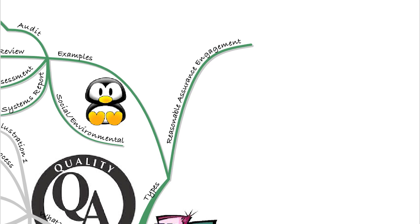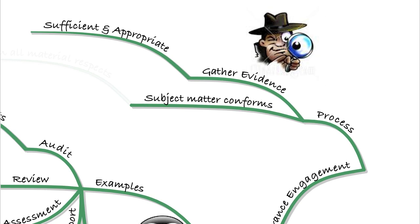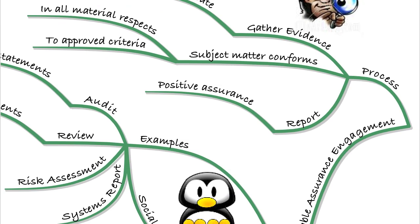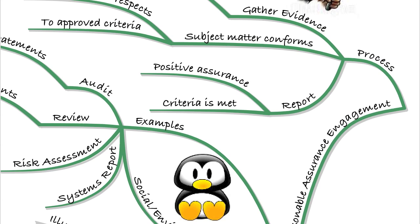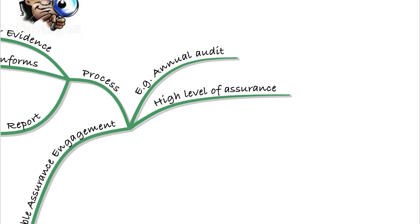The first type we looked at was a reasonable assurance engagement. The process here is that we gather evidence — that evidence must be sufficient and appropriate — that the subject matter conforms in all material respects to the approved criteria. The report provided is in the form of positive assurance, meaning the criteria have been met. An example of this would be the annual audit, which gives a high level of assurance.